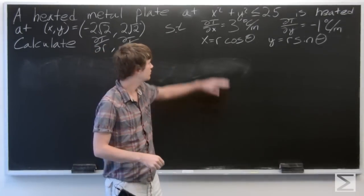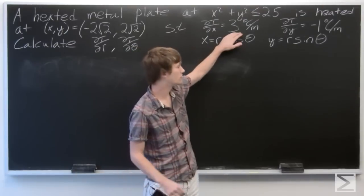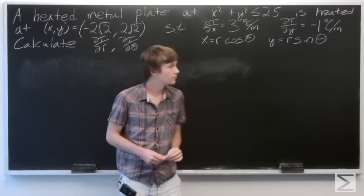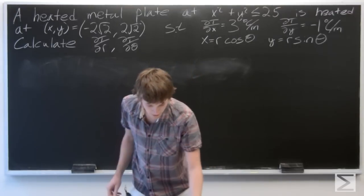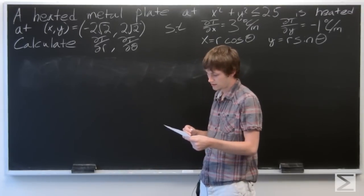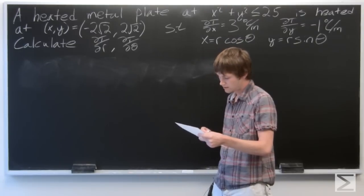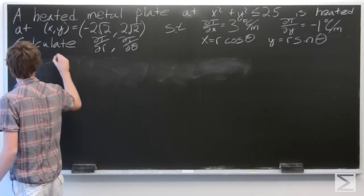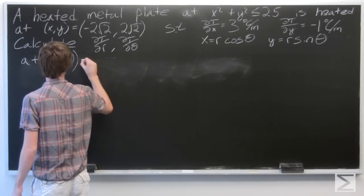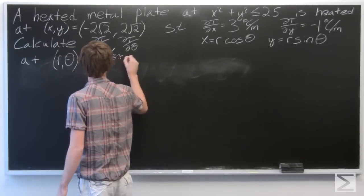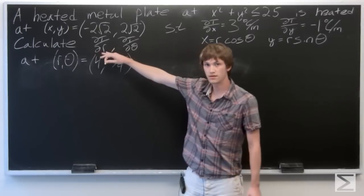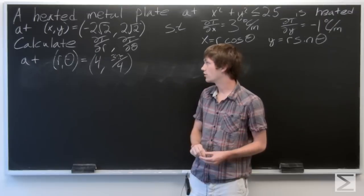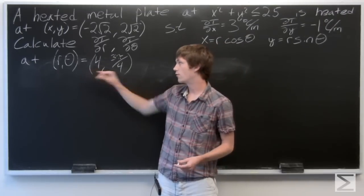We're told that the partial derivatives at this point are 3 degrees Celsius per meter and -1 degrees Celsius per meter. We want to find the partial derivative when r = 4 and θ = 3π/4. So we want to calculate ∂T/∂r at (4, 3π/4) and ∂T/∂θ at (4, 3π/4).